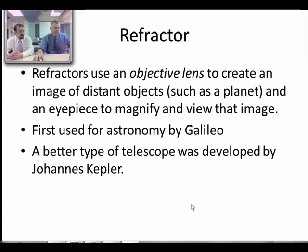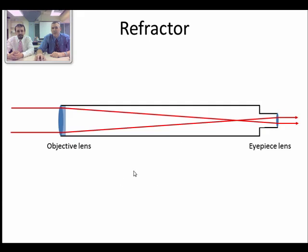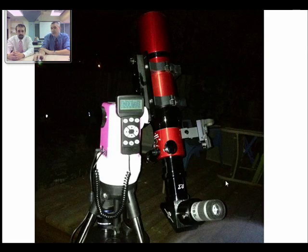Johannes Kepler developed a slightly different refractor version that produced a wider field of view, but the image was upside down — not very useful for military purposes. In the refractor diagram, the objective lens focuses the light which is viewed through the eyepiece. The image ends up upside down because the light rays from the top and bottom actually cross each other at the focal point.